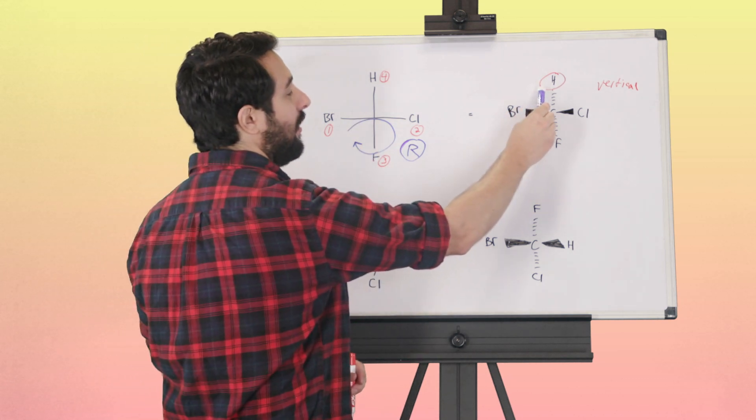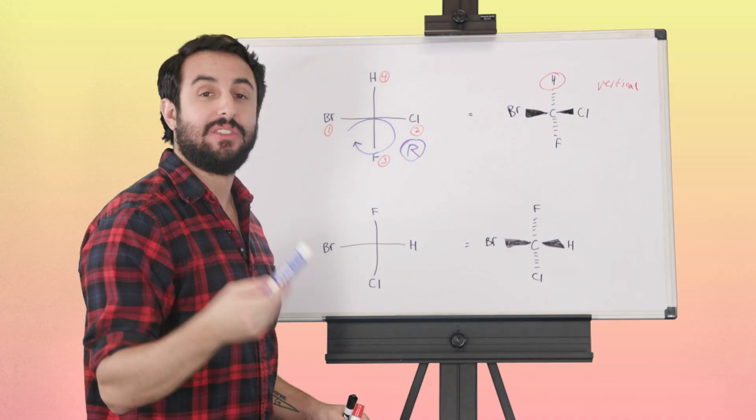That will be the case once again when the lowest priority substituent is on a vertical bond, because the vertical bond is implied to be the dash bond.